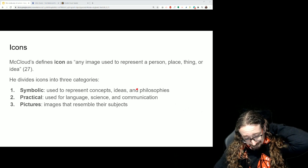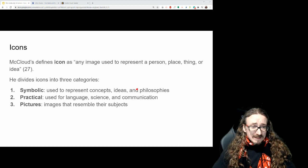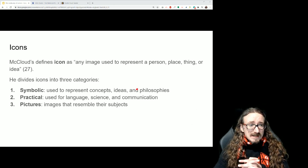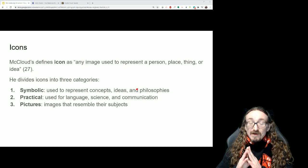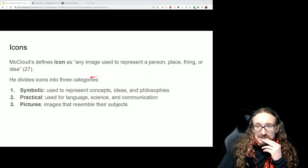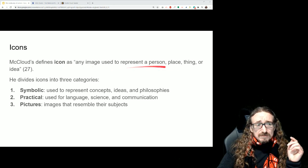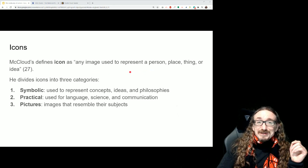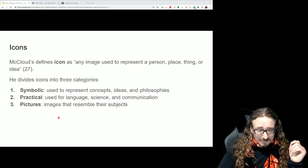So, icons. You might remember we talked about icons in Sellnow at the very beginning of the book. She talked about icons and indexes and symbols. Some of that is similar to what McCloud says, but also different. They're trying to talk about similar concepts, there's going to be some overlap in the terminology. But I think the way McCloud breaks this up makes pretty good sense. So he just says an icon is any image used to represent a person, place, thing, or idea. Basically an image that represents something besides itself.